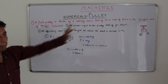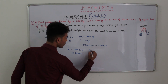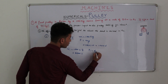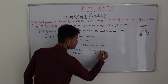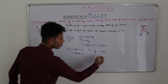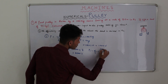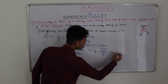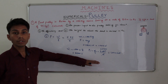We need to calculate the power input. Power input equals work input divided by time taken. Work input is 8000 Joules and time is 4 seconds. So 8000 divided by 4 equals 2000 Watts. So power input equals 2000 Watts. This is our first answer.